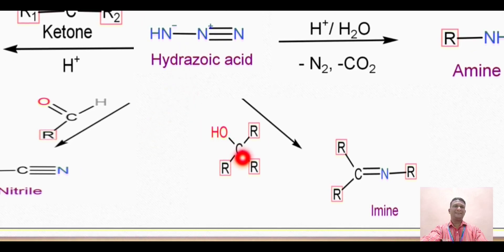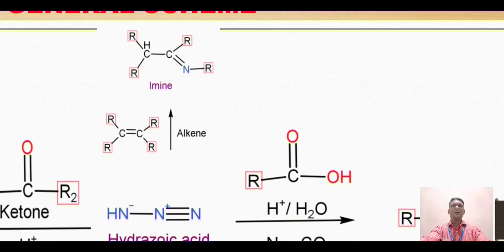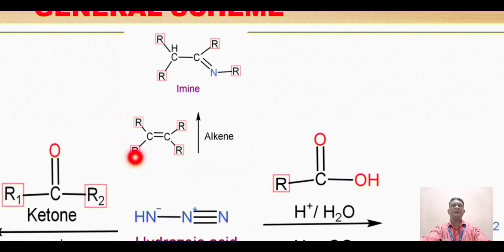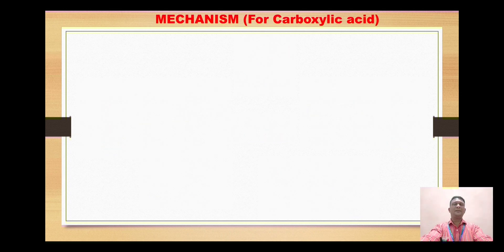Hydrazoic acid on reaction with ketone gives amide; on reaction with aldehyde gives formation of nitrile; on reaction with tertiary alcohol gives formation of amine; on treatment with alkene gives formation of imine. This is the general scheme of the Schmidt rearrangement reaction.